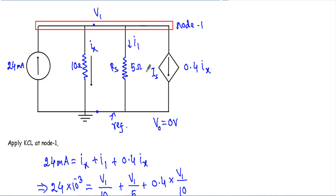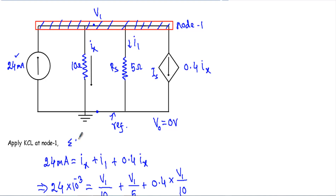Now I will apply nodal analysis to calculate ix. I denote this node as node 1 with node voltage v1, and the ground acts as the reference node with voltage v0 = 0. Applying KCL at node 1: the 24 milliampere current is incoming. I assume ix as outgoing current through the 10 ohm resistor, I1 as the current through the 5 ohm resistor, and 0.4ix flows downward. KCL gives: summation of incoming currents equals summation of outgoing currents.